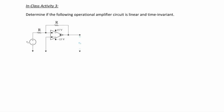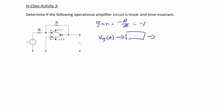Let's look at another example. Here we have an ideal operational amplifier and we want to determine if it is linear and time invariant. The gain for an inverting amplifier is negative R_feedback over R_input, so in this case it's negative R over R, which equals negative one. So the output v0(t) equals the negative of vg(t).